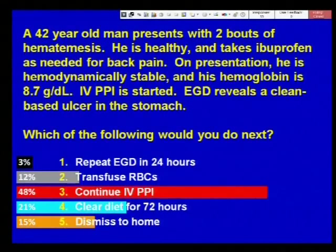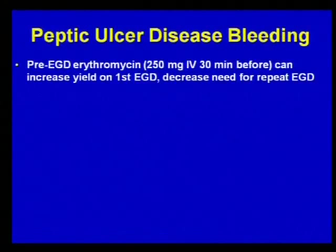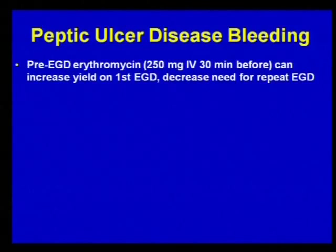48% decided to continue IV PPI therapy, but only 15% selected dismiss to home, which may not be an unreasonable answer — I would feel that might be the best answer in this case. To review these peptic ulcer disease bleeding guidelines: pre-upper endoscopy erythromycin can be given to increase yield on the first upper endoscopy and possibly decrease the need for a repeat EGD, by stimulating gastric motility and emptying any blood that might be sitting there.